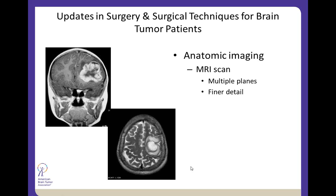MRI is certainly employed routinely with brain tumor patients. It allows multiple planes to be examined — axial, coronal, and sagittal views — giving a better appreciation for the finer detail of the tumor and the brain itself. Here we see an axial T2 sequence, which lets us look at the fluid around the brain. In this case, this is the left hemisphere with a lot of surrounding edema.